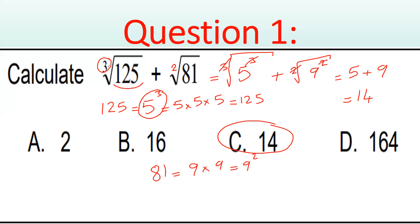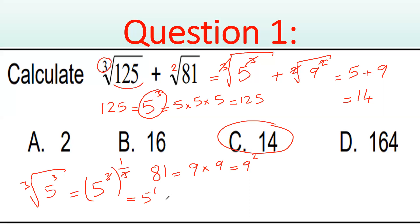So how do we approach this? First, we must try to get the same power. For example, 5³ under a cube root — we can think of it as 3 times (1/3), which simplifies to 5 to the power of one, which equals five. Just simplify like this. Step one: make the same base and power for each term, then simplify. That's our question one — answer is C.